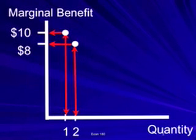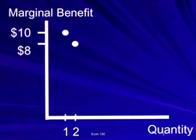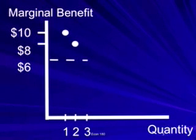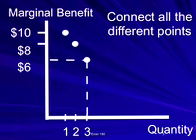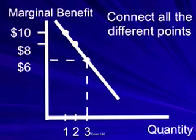We can continue this process — for example, for a third unit. Suppose that the third consumer is willing to pay only $6 for this product. If we continue this process for all possible prices in the market, then we will yield the demand curve.